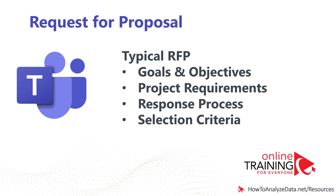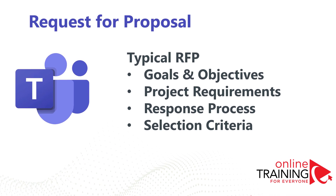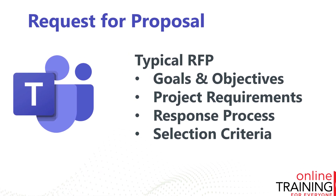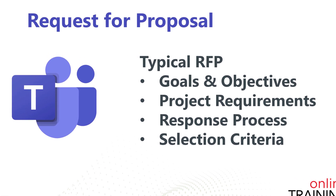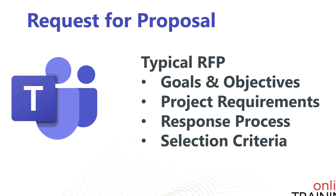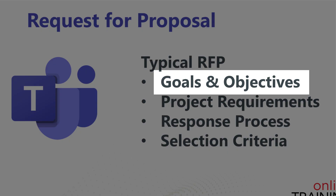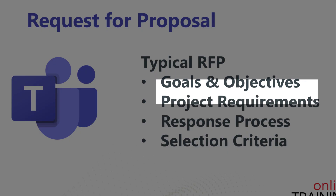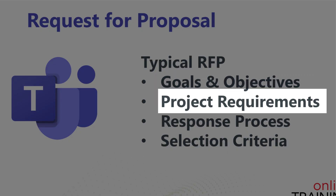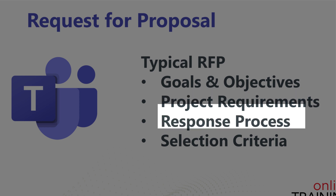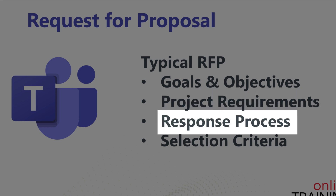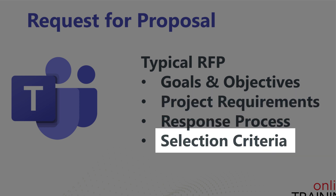When you're working on a request for proposal, typically you need to have at least four major sections. You need to be able to share goals and objectives with the vendor, communicate project requirements, outline the response process, and define selection criteria.